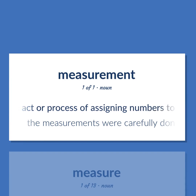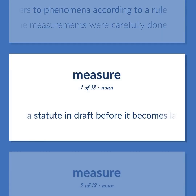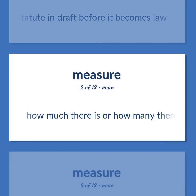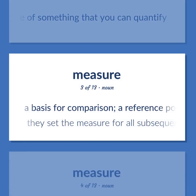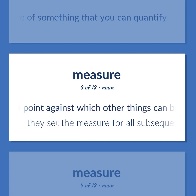Measurement: the act or process of assigning numbers to phenomena according to a rule. Example: 'The measurements were carefully done.' Also: how much there is or how many there are of something that you can quantify. And: a basis for comparison — a reference point against which other things can be evaluated. Example: 'They set the measure for all subsequent work.'